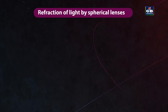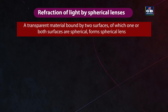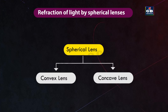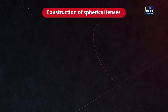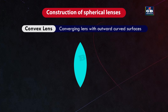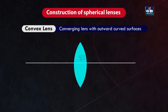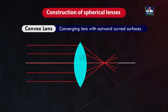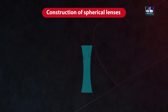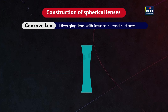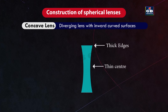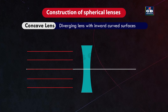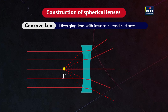Refraction by spherical lenses: a transparent material bound by two spherical surfaces forms a spherical lens, which can be convex or concave. A convex lens (converging lens) is thicker at the center and thinner at the edges; it converges parallel incident light rays to a single focal point. A concave lens (diverging lens) curves inward, is thinner at the center and thicker at the edges; it causes parallel incident light rays to diverge away from a virtual focal point.